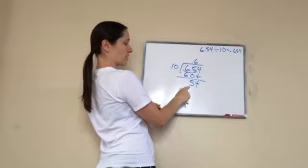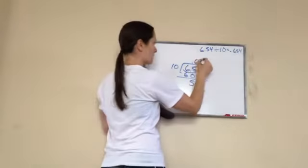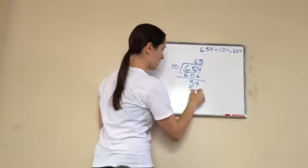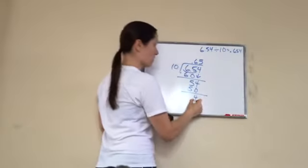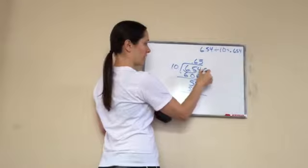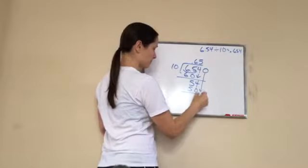Okay. 5 times. 10 will go into 54. Five times. 5 times 10 is 50. Okay. Four. What am I going to do here? Add a zero. Slide it down.